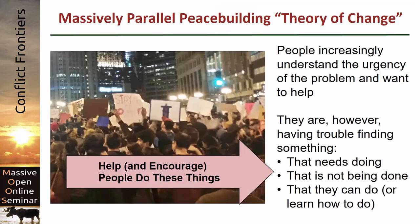As you may remember, the theory of change underlying massively parallel peacebuilding is this notion that people are increasingly understanding the urgency of the conflict problem and they want to help. But unlike following a natural disaster, they don't quite know what to do. It's hard to identify the things that need doing, find out whether they're actually being done so you don't duplicate effort, and what each person can do to help, and how they can learn how to do it if they don't know already. So we want to try to apply those ideas here.